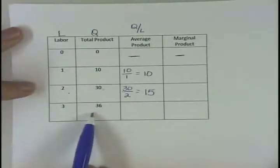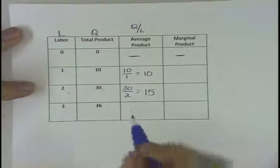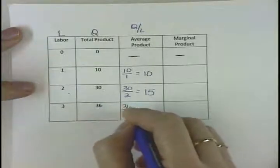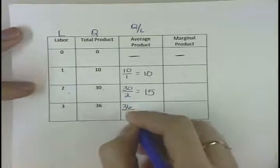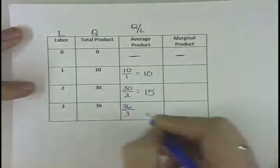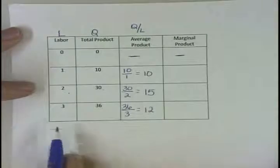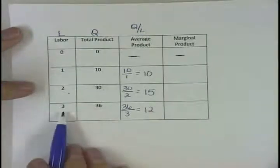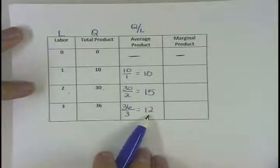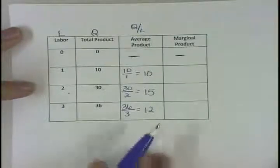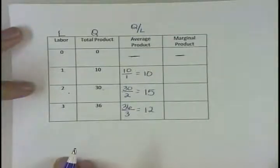To find average product for the third unit of labor, when we have three units, we're going to take 36 — the Q value — and divide it by the L, which is 3, and that should be 12. When we have three units of labor, our average product of labor is 12. Each one, on average, is producing 12 units.